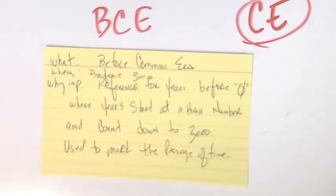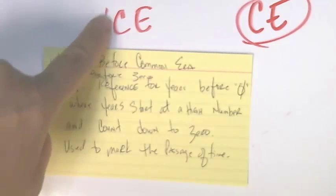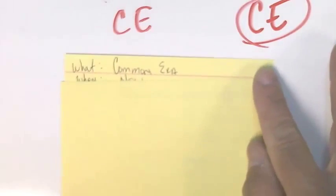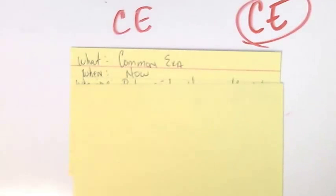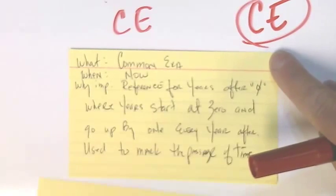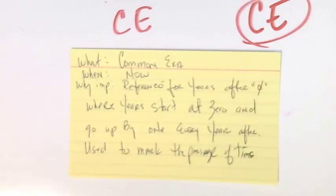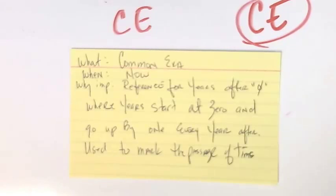The next term is CE — Common Era, which is the era we live in now. The when is the current time frame, or years after zero. The why important is very similar to BCE — it's a reference for years after zero where years start at zero and then go up by one every year, up until 2013 which we are in now. It is used to mark the passage of time, putting historical events into a consistent timeline at a consistent pace, so we can keep things in a steady flow and understand the sequence of them.